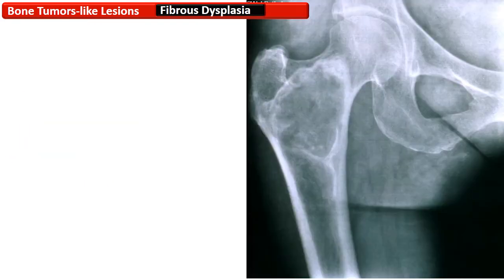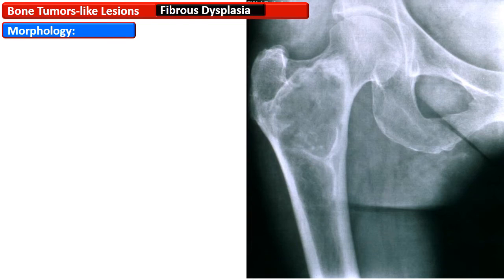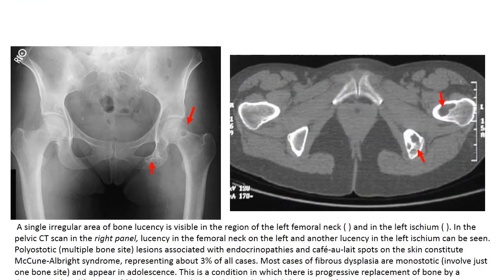This radiograph describes fibrous dysplasia features showing an intramedullary lytic lesion that may expand, causing bowing of the bone and thinning of the cortex, with absent periosteal reaction. On the left is a plain radiograph of the pelvis showing a single irregular area of bony lucency in the left femoral neck and another lucency in the left ischium. On the right, the pelvic CT scan corroborates these lucencies in both the femoral neck and ischium. These polyostotic lesions are usually associated with McCune-Albright syndrome.